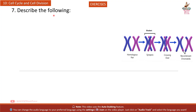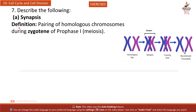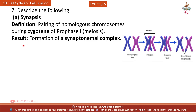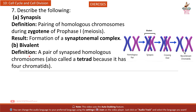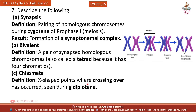Question 7: Describe the following. A. Synapsis — pairing of homologous chromosomes during zygotene of prophase 1 meiosis, resulting in formation of a synaptomal complex. B. Bivalent — a pair of synapsed homologous chromosomes, also called a tetrad because it has 4 chromatids. C. Chiasmata — X-shaped points where crossing over has occurred, seen during diplotene.